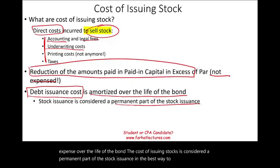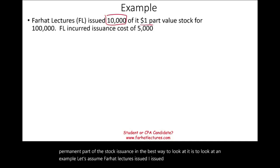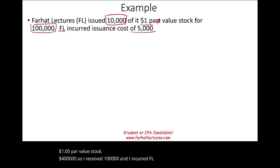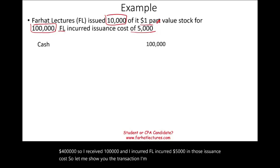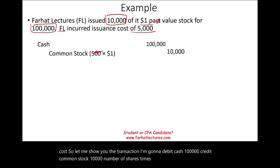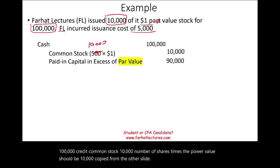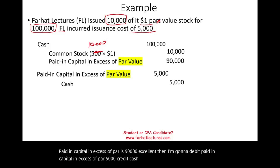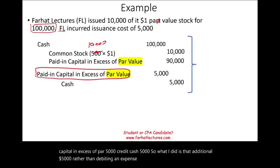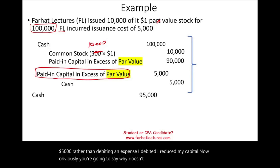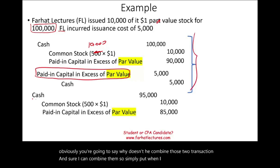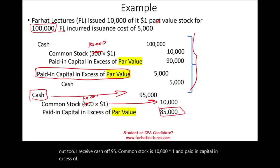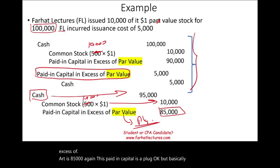Example: Farhat Lectures issued 10,000 shares of $1 par value stock for $100,000, and incurred $5,000 in issuance costs. Journal entry: debit cash $100,000; credit common stock $10,000 (10,000 × $1); credit paid-in capital in excess of par $90,000. Then for issuance costs: debit paid-in capital in excess of par $5,000; credit cash $5,000. Combining both entries: debit cash $95,000; credit common stock $10,000; credit paid-in capital in excess of par $85,000. The paid-in capital is reduced by the $5,000 issuance cost.